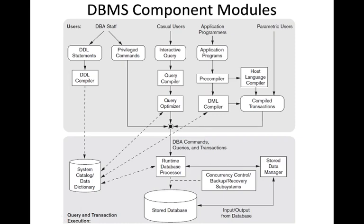The DBMS has a database catalog, which is stored in the secondary storage itself even though it is shown separately. This system catalog or data dictionary will be stored in the database itself. The disk access is controlled by the operating system, which controls disk access and buffer management, even though the DBMS has its own buffer management.